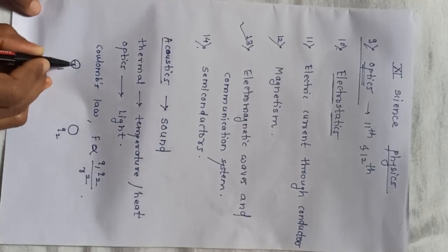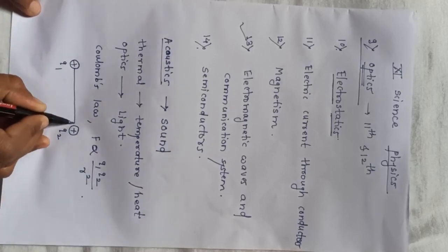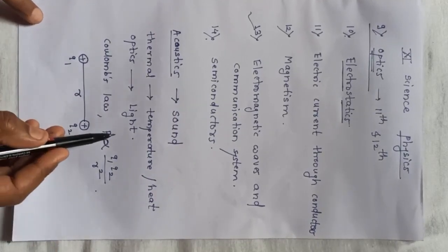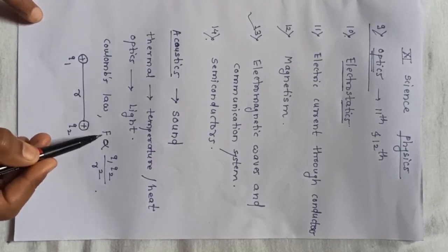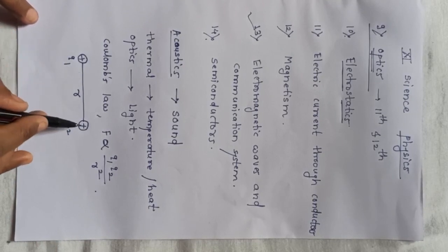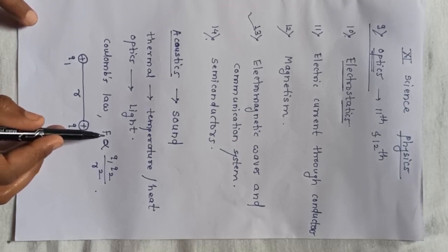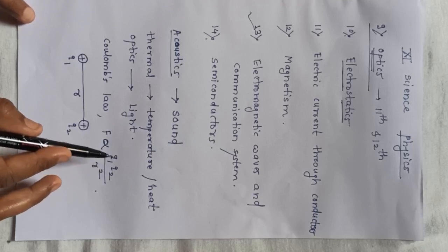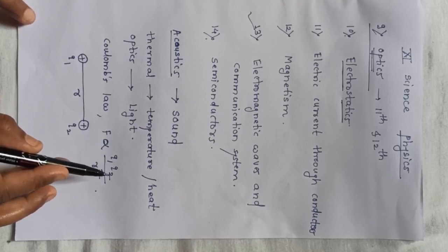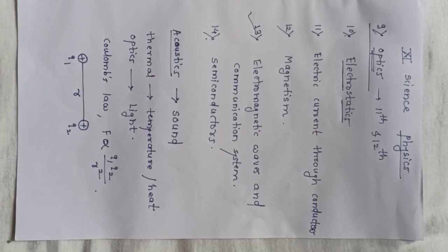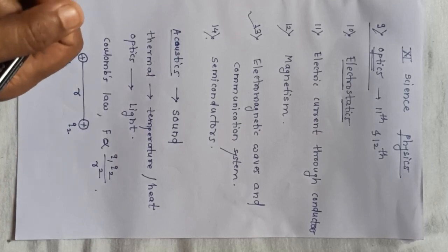For example, if Q1 and Q2 are two positive charges separated by distance r in air, then the force of repulsion between them is directly proportional to Q1 times Q2 and inversely proportional to the square of the distance. I will explain all these basic introductory concepts that we have already studied up to the 10th standard.